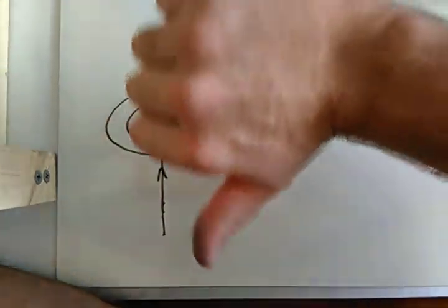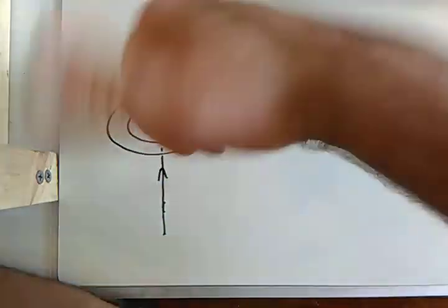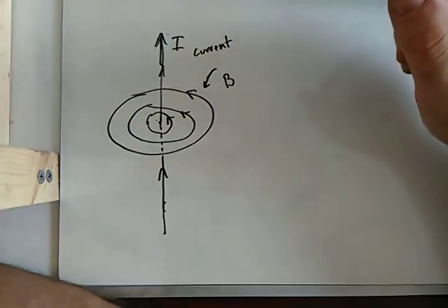Similarly, if I hold my hand down and I show the current going down, the direction, of course, you can't see that, but the direction follows the direction of your curved fingers.